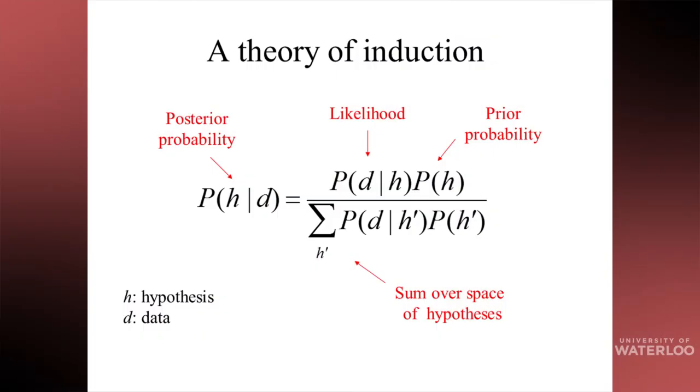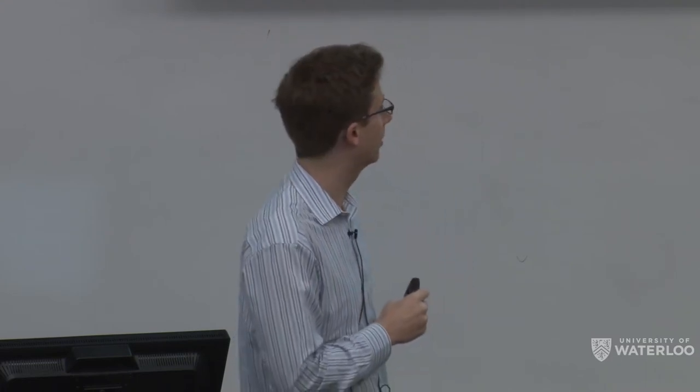Bayes' rule tells us how a rational agent should update their beliefs about some hypotheses if they express their degrees of belief in terms of probabilities. If you have a prior probability for a hypothesis — how much you believe it to be true — then you can calculate a posterior probability after observing data D by taking the prior probability and multiplying it by a likelihood: the probability of those data being observed if that hypothesis were true. You then normalize by summing over the space of all hypotheses. For the word learning problem, the hypotheses are about what the word could mean, the data is me labeling an image as a jumbuck, and you calculate a posterior probability distribution over those hypotheses.